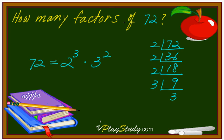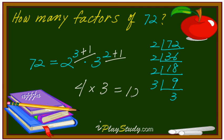Now you're going to add 1 to each exponent. That means 3 + 1 = 4, and 2 + 1 = 3. So 4 times 3, which is 12. The answer is 12 factors. Fantastic!